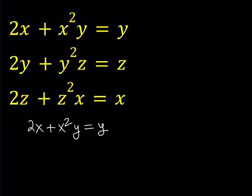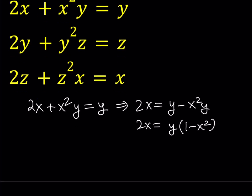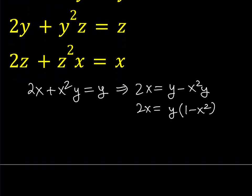What I'd like to do is isolate the y terms on one side. So subtract y minus x²y, and then factor out y to get 1 minus x squared. If you divide both sides by 1 minus x squared, you get y equals 2x over 1 minus x squared.